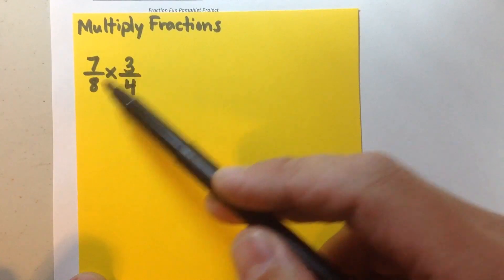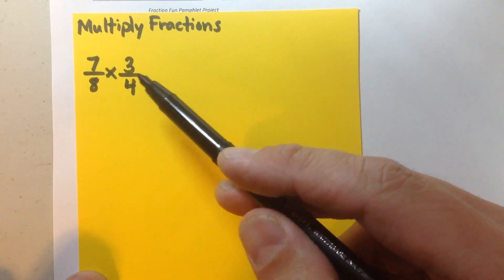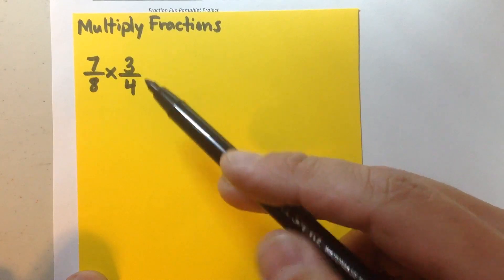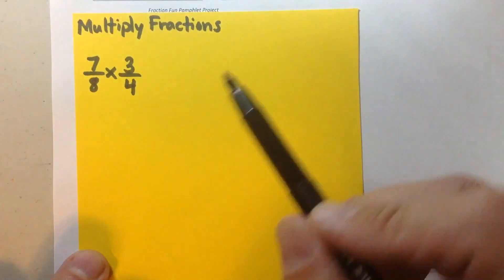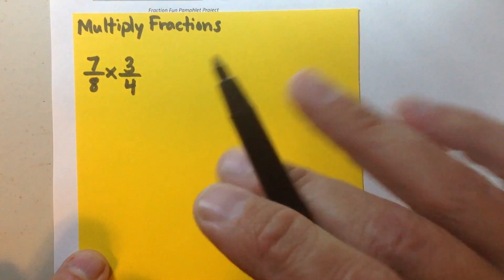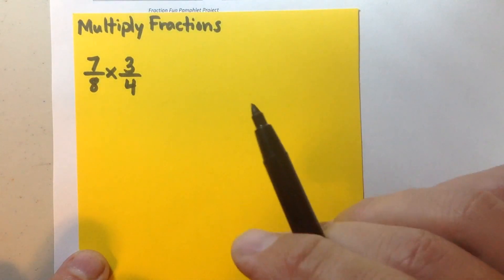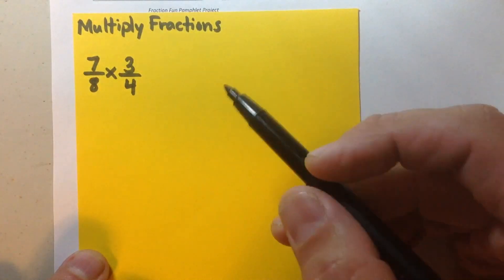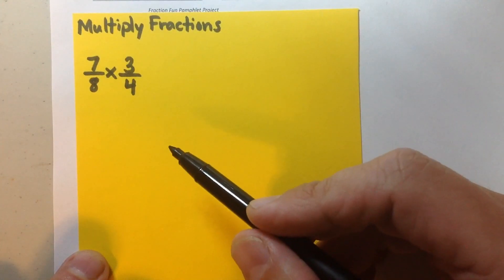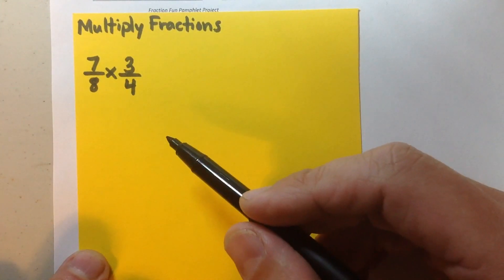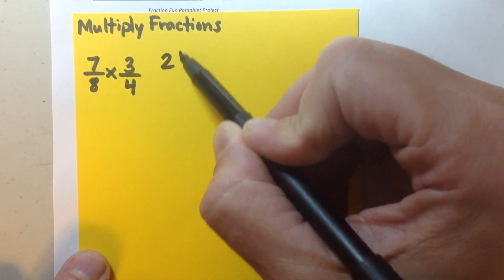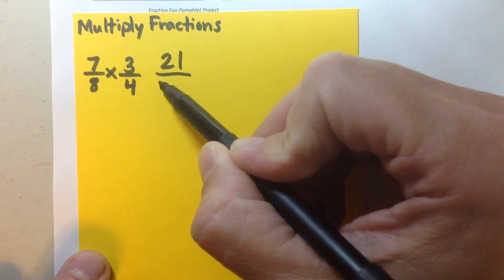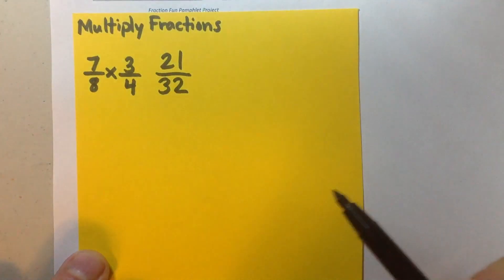So you'll notice I've got a 7 and a 4, they share no common factors, a 3 and an 8 that share no common factors. So I know that when I multiply this out it won't be able to be simplified. And that's going to make this a simpler example so I could just focus on the topic at hand which is multiplying fractions. Now you all know that the steps for multiplying fractions, you don't need to worry about a common denominator. You just multiply your numerators, and you multiply your denominators, and that's all there is to it.